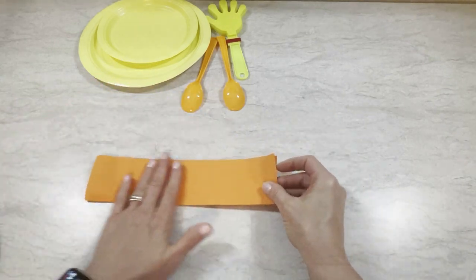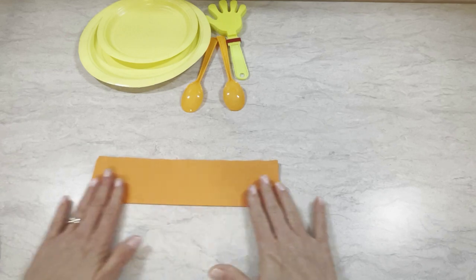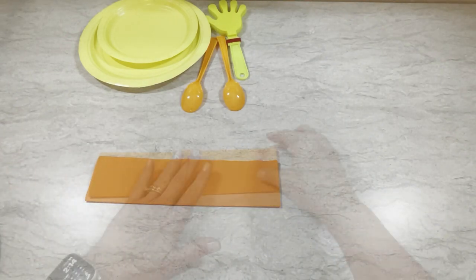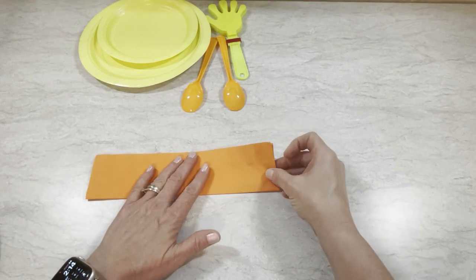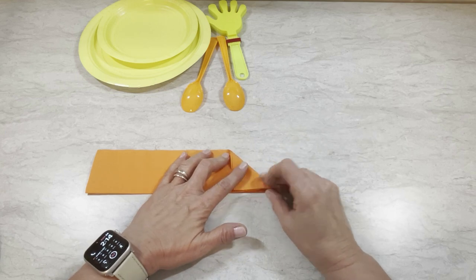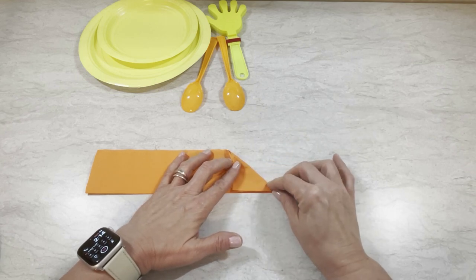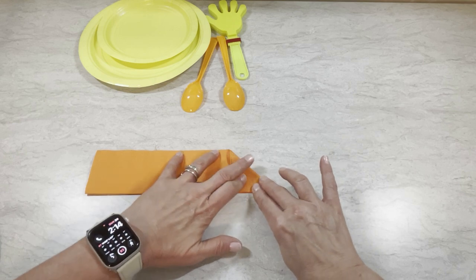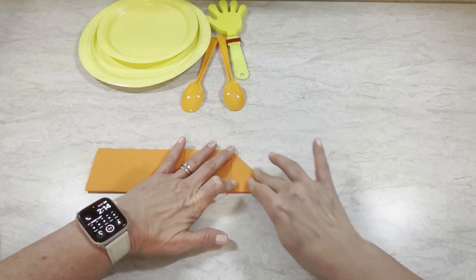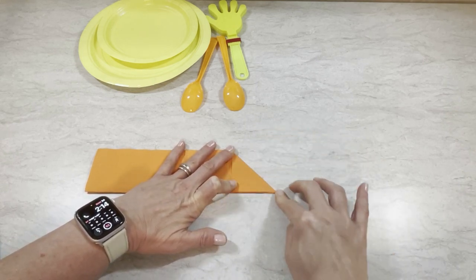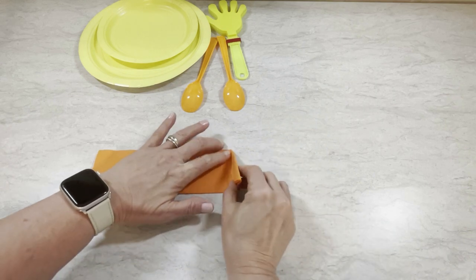We're just going to do sort of an almost like a paper football fold. I'm going to start at the right side and fold that down until it meets the edge and makes a triangle and then fold it straight over.